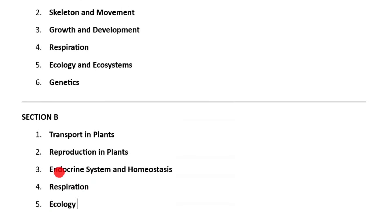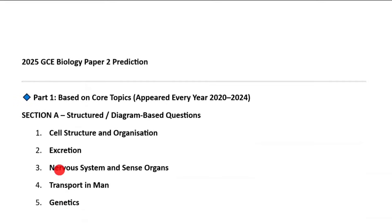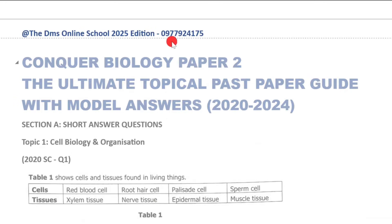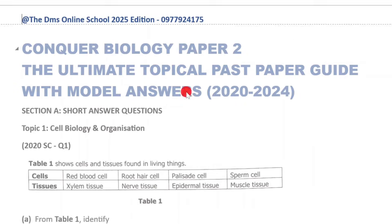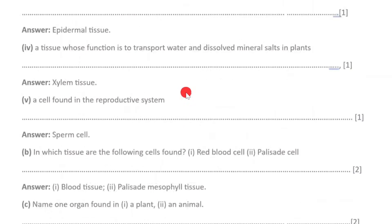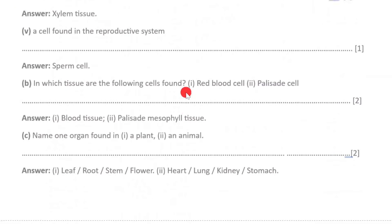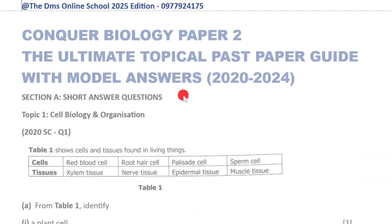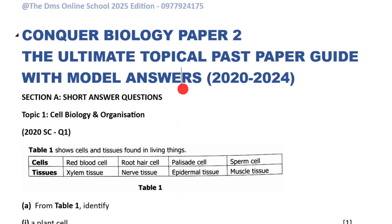This is what I expect in this year's Biology Paper 2 for GCE 2025. Just as I said, if you want to do well, WhatsApp me on 0977-924-175. You get the revision package in video form at 50 kwacha promotion, or the ultimate topical past paper guide with model answers also at 50 kwacha. Thank you so much, guys, for now. Bye, and see you in the next prediction.